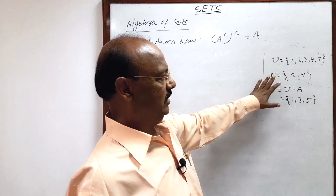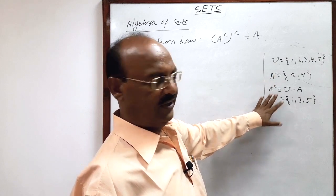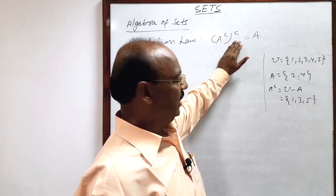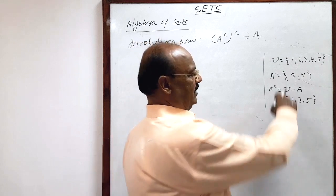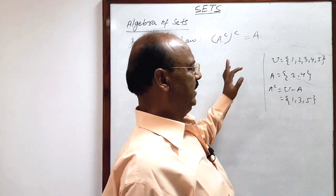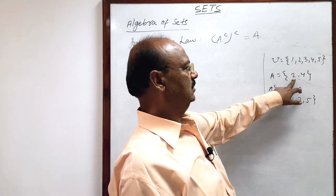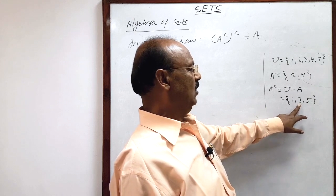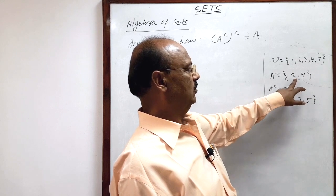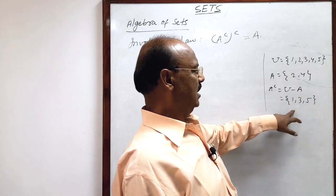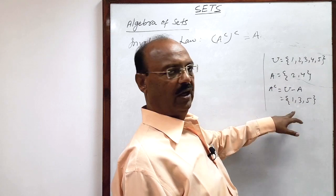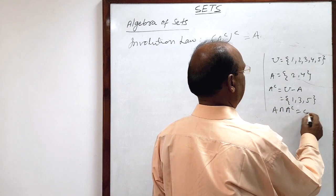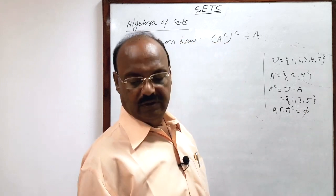If the universal set and set A are given, we can find A complement, and here we have to show the double complement. We can conclude from this example that any element belonging to set A will not belong to A complement, and if an element belongs to A complement it will not belong to set A. These two sets are totally disjoint — A intersection A complement is the null set, no element is common.